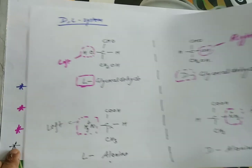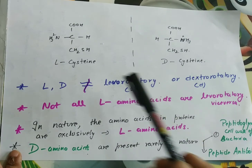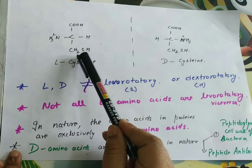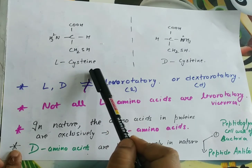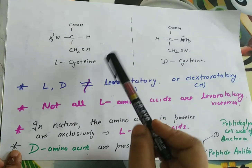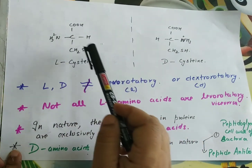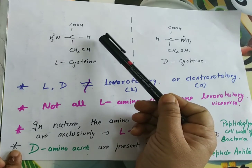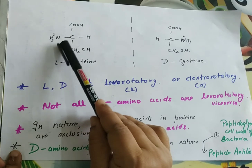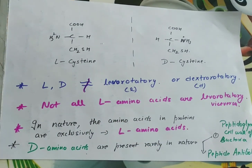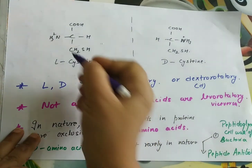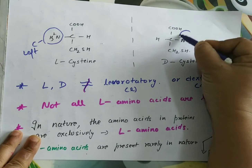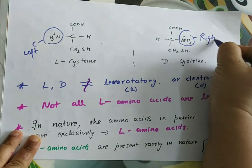Let's take another example — cysteine, where the R group is CH2SH, a sulfur-containing amino acid that forms disulfide bonds. We write the molecule with the carboxyl group on top and R group at the bottom, with H to the side. When the amino group is on the left side, it is L-cysteine; when it is on the right side, it is D-cysteine.